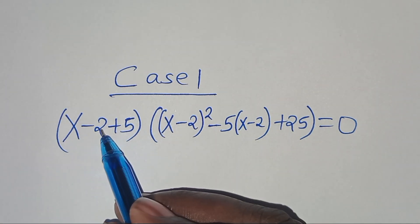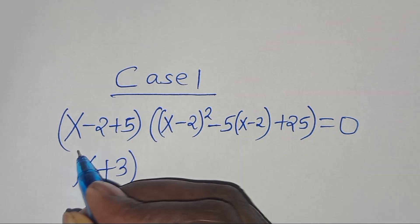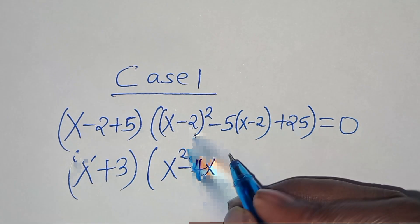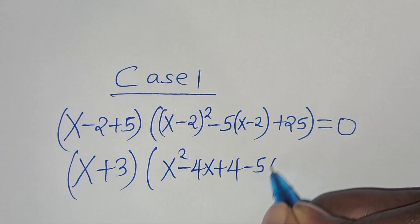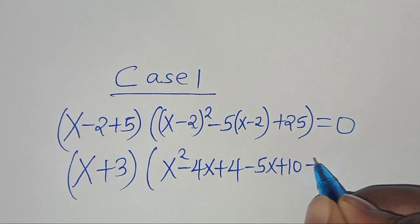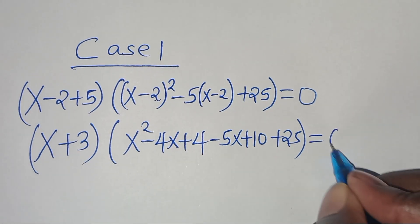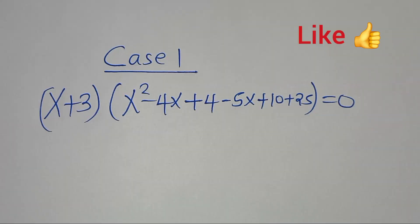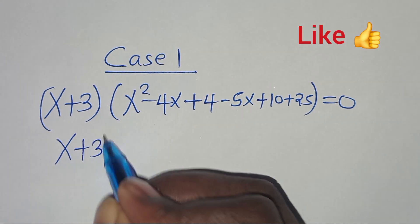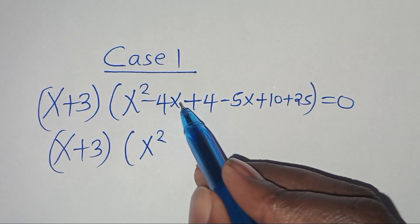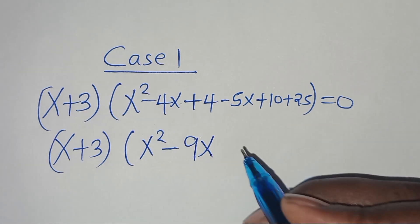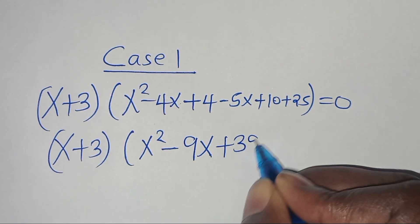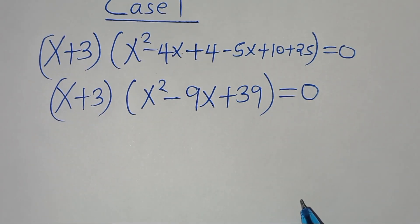So we have (x minus 2 plus 5), which is (x plus 3), times [(x minus 2)^2 minus 5(x minus 2) plus 25]. Expanding: x squared minus 4x plus 4 minus 5x plus 10 plus 25, giving x squared minus 9x plus 39, equal to 0.